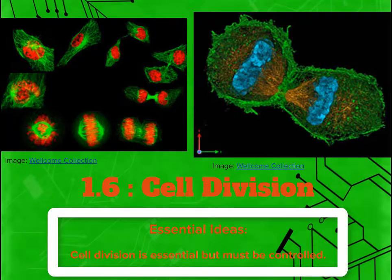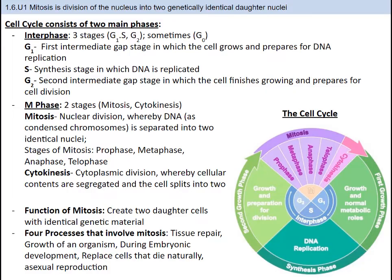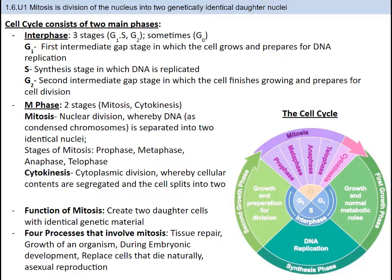You probably learned about cell division back in your middle school days during life science. Maybe you remember the stages of the cell cycle. The cell cycle consists of two stages: interphase and the M phase. We are going to talk about these phases in depth.